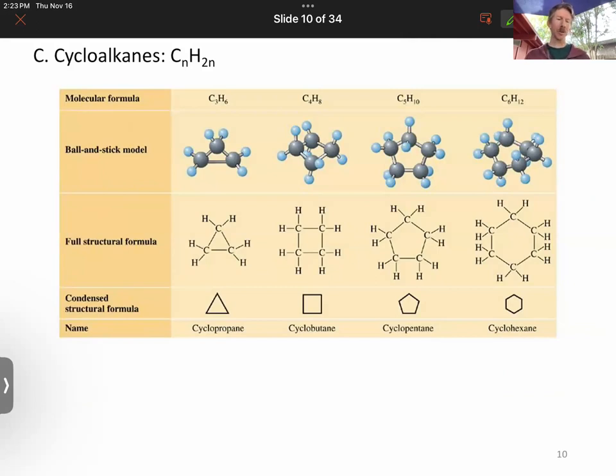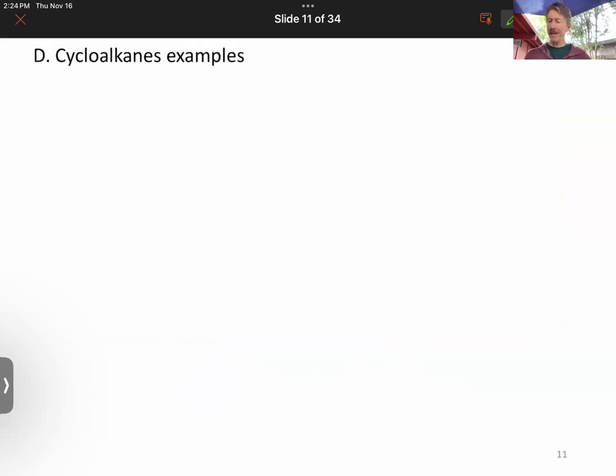Our last bit of naming is going to be cyclos. The cyclos are fairly easy, let's say, because you already know that three carbons is propane. Put them in a ring, and you get cyclopropane, cyclobutane, cyclopentane, and cyclohexane. So if we had 1, 2, 3, 4, 5, 6, 7, 8, that would be cyclo-octane. I think you'd actually have to have the two O's in there. Some cyclo-octane examples will be similar as far as priority of naming.